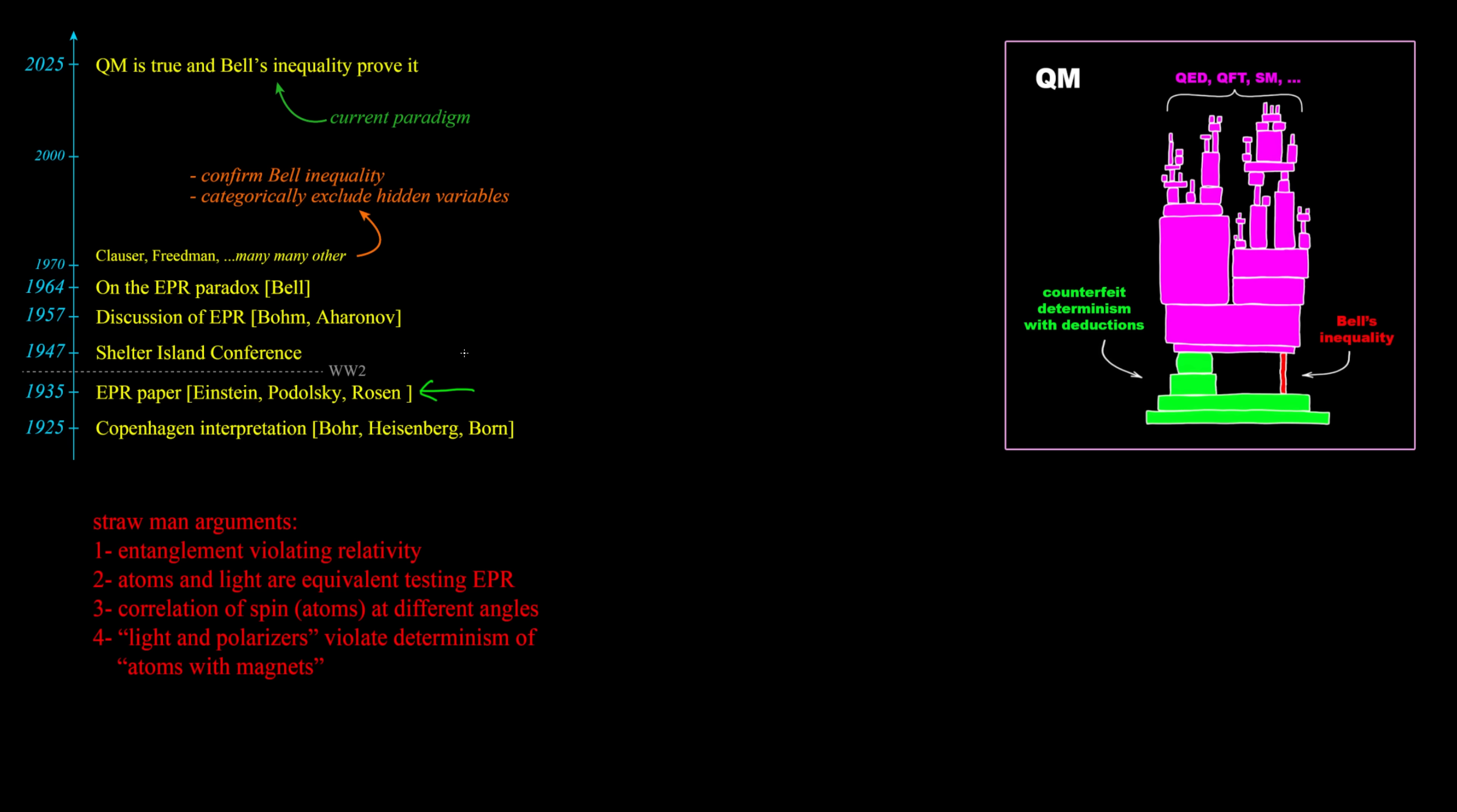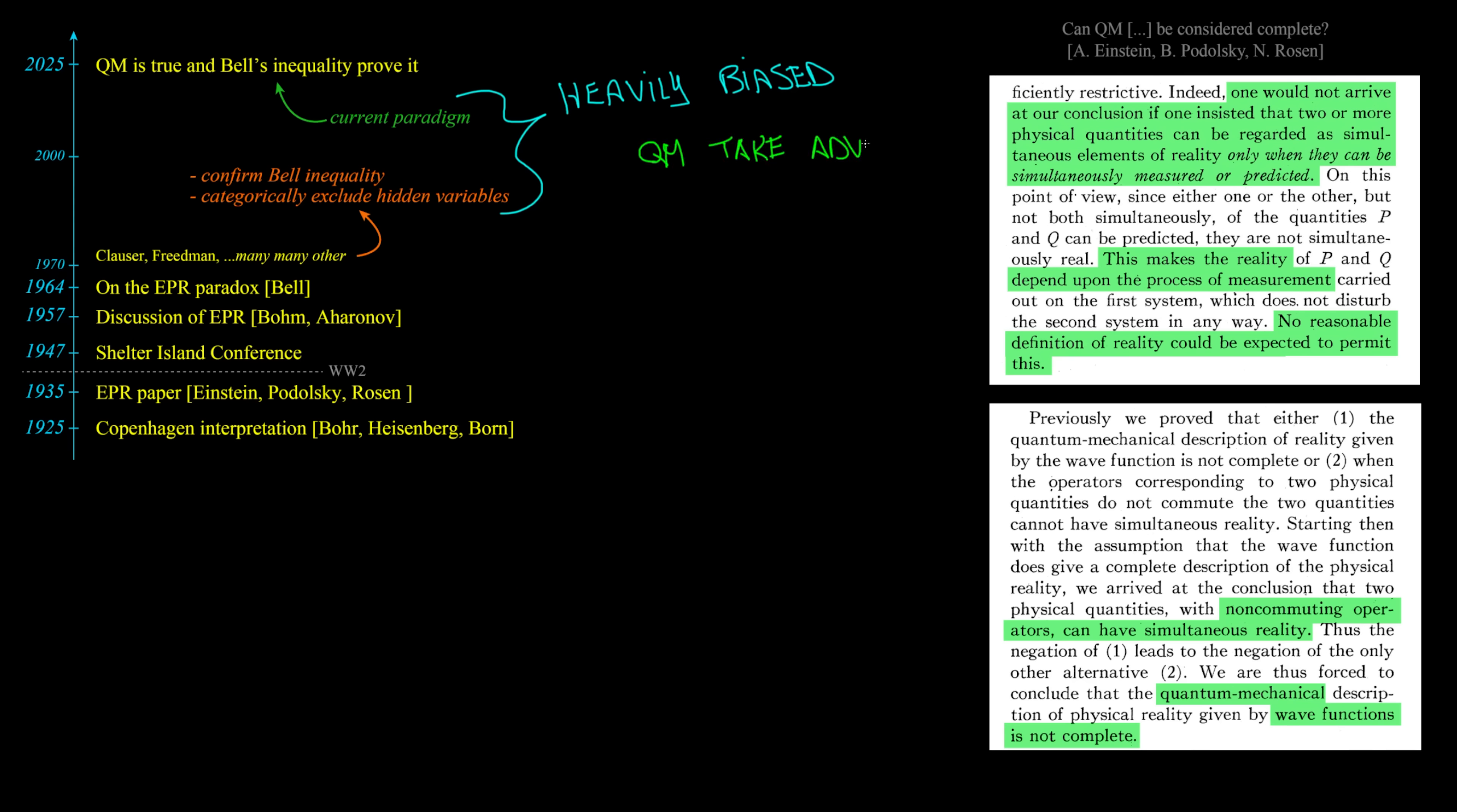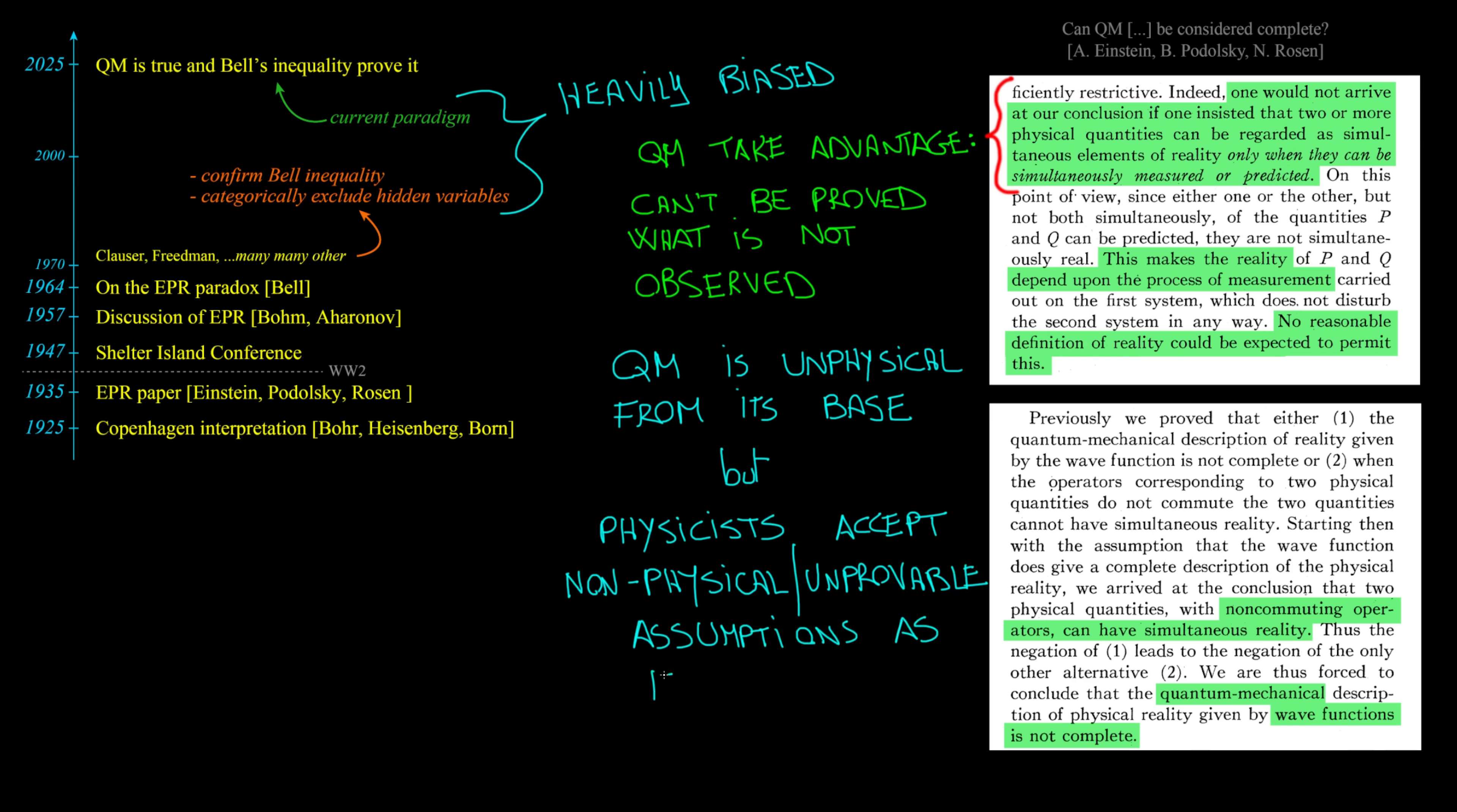The original EPR paper has never been really questioned, and the history of Bell inequality is full of straw man arguments. Polarization of light with its correlation is easily explainable with hidden variables. So even the one pillar holding the whole quantum mechanics is made up, because physicists look for agreement in place of computations. And current paradigm stands on a heavily biased consensus. Quantum mechanics uses arbitrary methods, taking advantage of the fact that it cannot be proved what is not observed. Since with quantum mechanics reality pops out from nowhere and violates both energy conservation and relativity, we need to mark it as unphysical from its very base. It is necessary to look from the outside to see quantum mechanics mistakes. Flaws start from the statements. No evidence supports the assumptions, yet physicists accept non-physical and unprovable statements as foundation. And at this point they are already done.